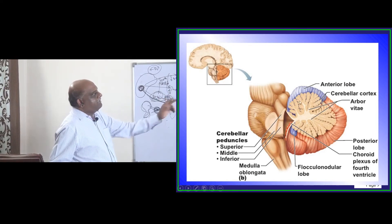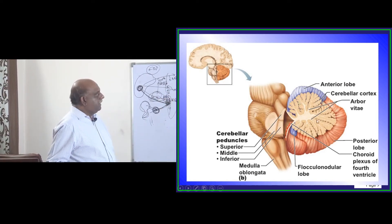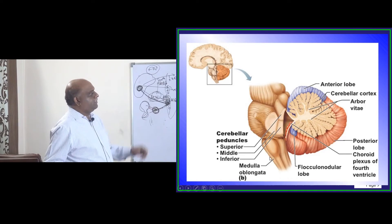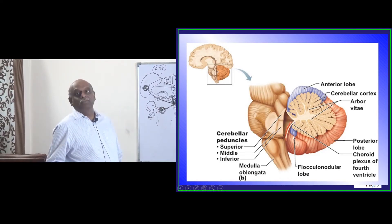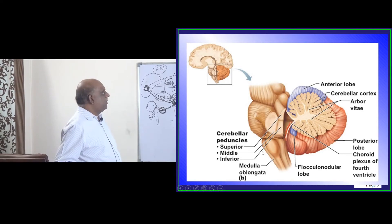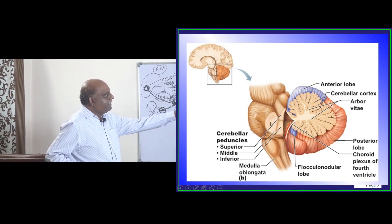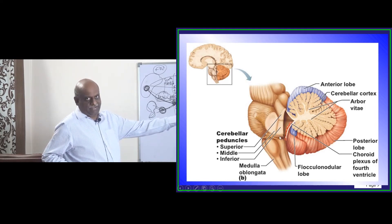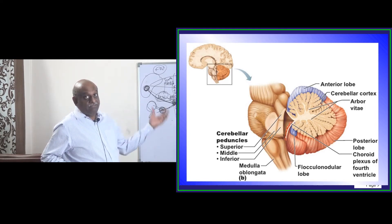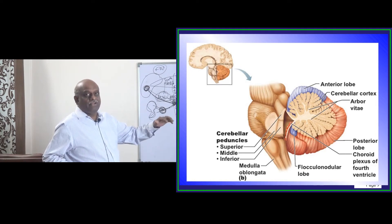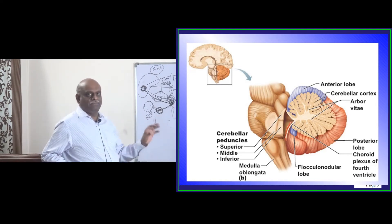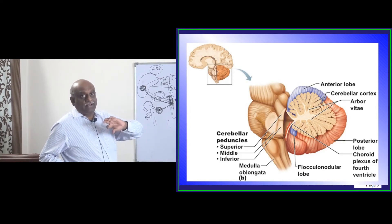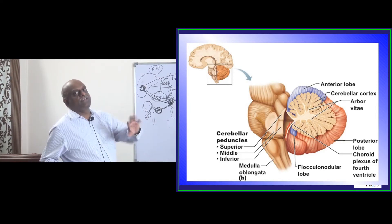The cerebellum has an anterior cerebellar lobe, a posterior cerebellar lobe, and a flocculo-nodular lobe. The three peduncles are: superior, middle, and inferior. The inferior cerebellar peduncle connects the cerebellum with the medulla; the middle cerebellar peduncle connects the pons with the cerebellum; and the superior cerebellar peduncle connects the midbrain with the cerebellum.